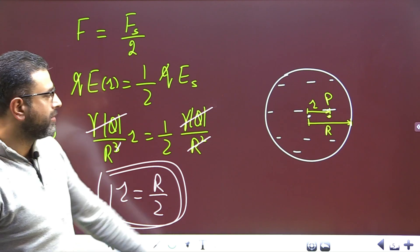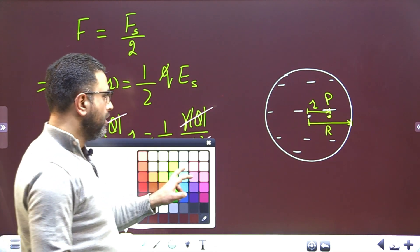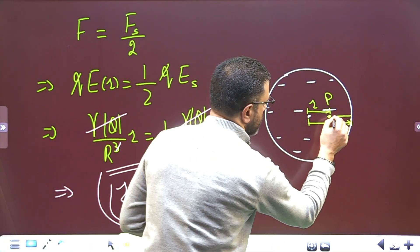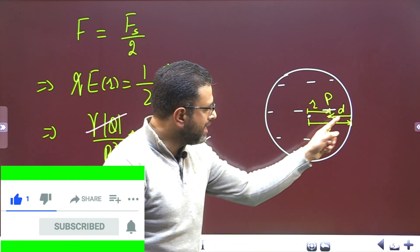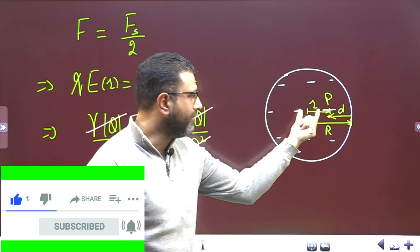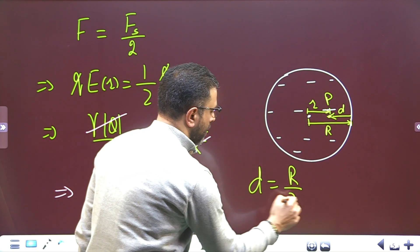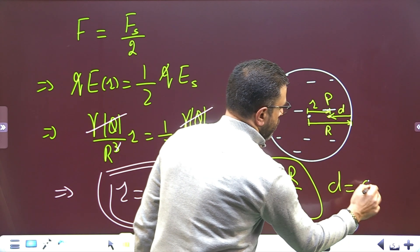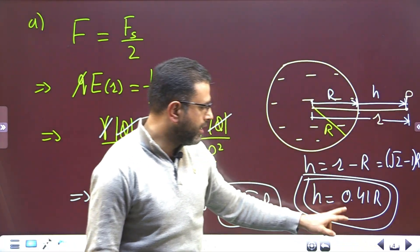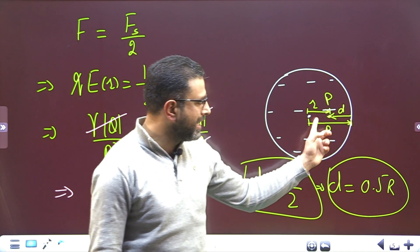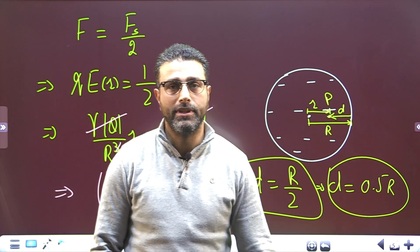This r = R/2 is the distance from the center. We want depth D from the surface, which is D = R − r = R − R/2 = R/2 = 0.5R. So for points outside the sphere, the answer is 0.41R from the surface, and for points inside the tunnel, the answer is 0.5R from the surface.